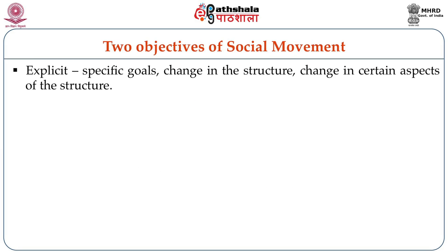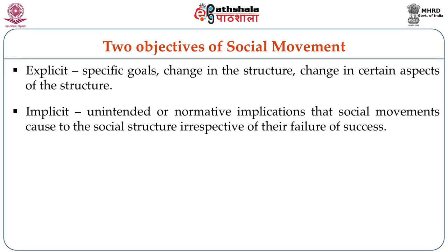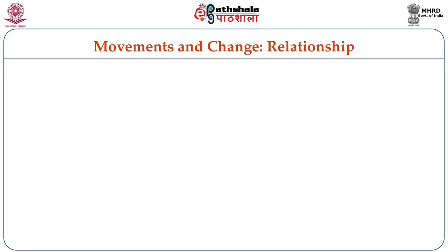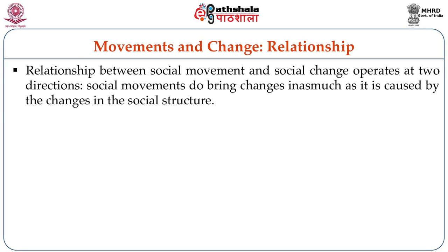The objectives of social movement can be divided into explicit and implicit. In the explicit objective, we focus on the specific goal — change in the structure of society or a certain aspect of social structure. In the implicit objective, we focus on the unintended or normative implications that a social movement causes to the social structure, irrespective of their failure or success.